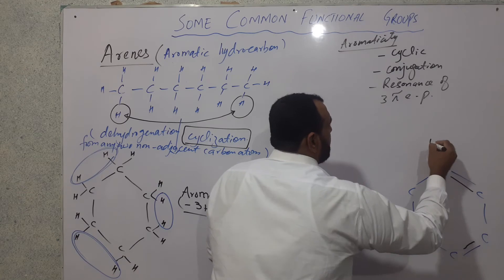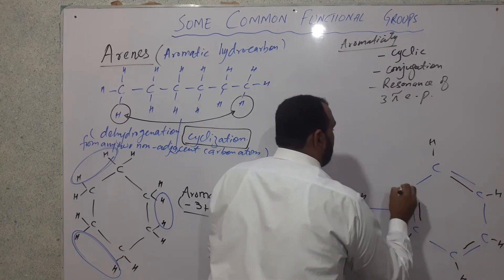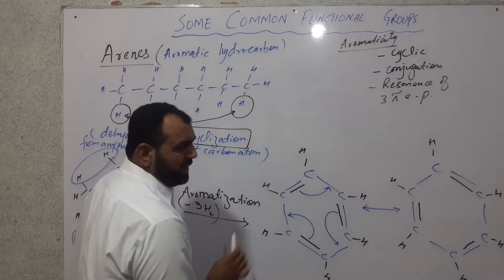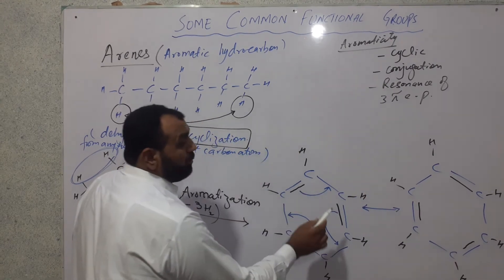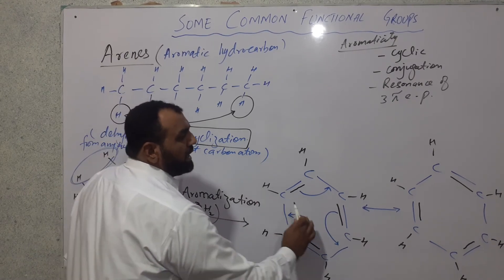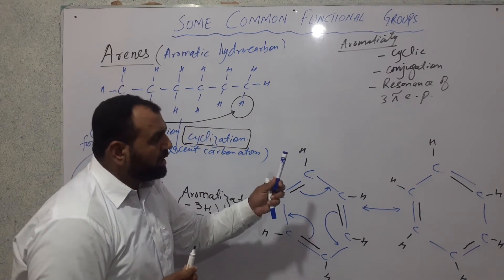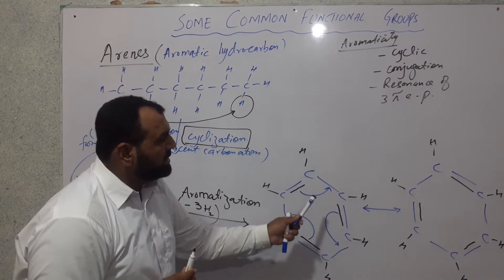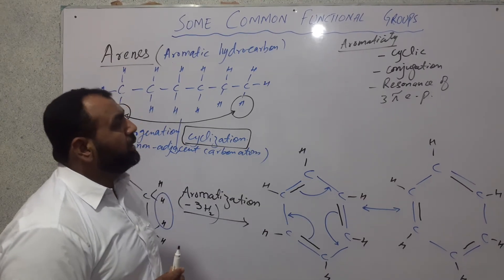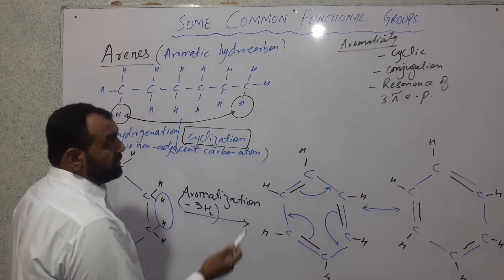The result is again a six-membered ring with three pi bonds, but in different positions. These two structures of benzene — both six carbon atoms with three pi bonds — differ only in the position of the pi bonds due to rotation. This rotation of pi bonds is called resonance. Cyclic compounds which have conjugation and are capable of resonance of three pi electron pairs are termed aromatic hydrocarbons.